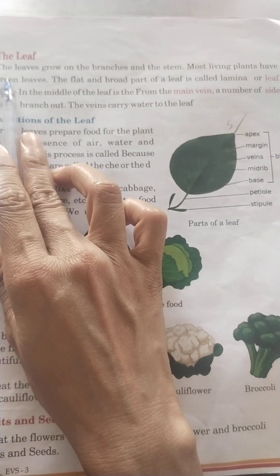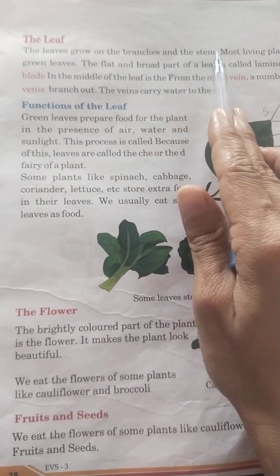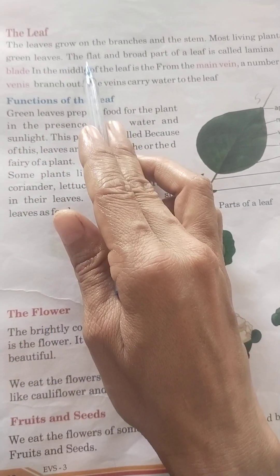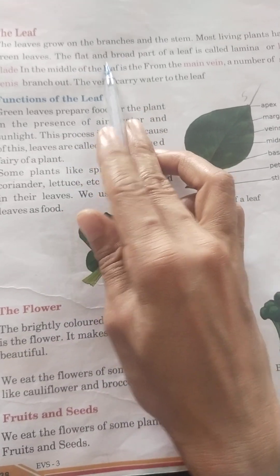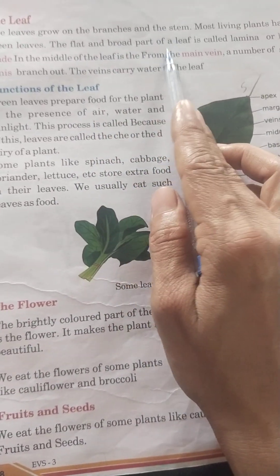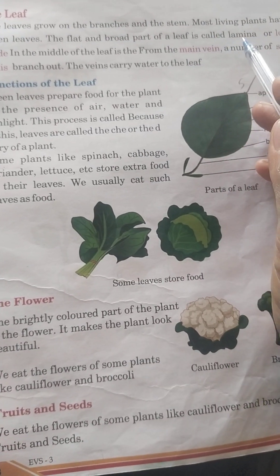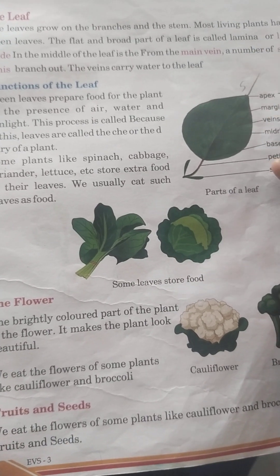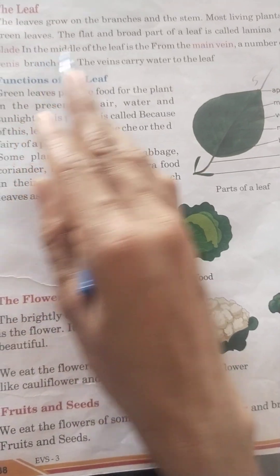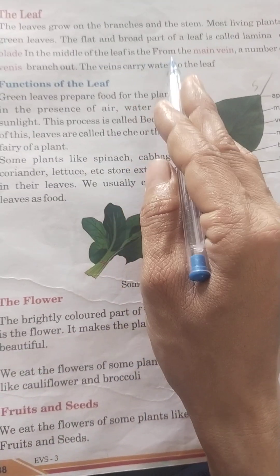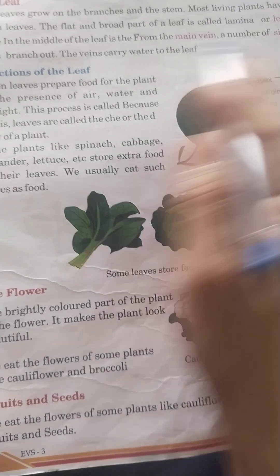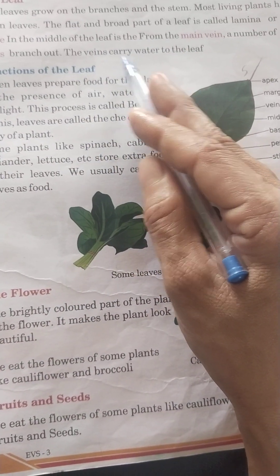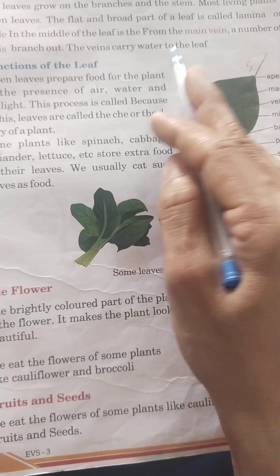The leaf: the leaves grow on the branches and the stem. Most living plants have green leaves. The flat and broad part of a leaf is called lamina, or leaf blade. In the middle of the leaf is the firm main vein. A number of side veins branch out. The veins carry water to the leaf.